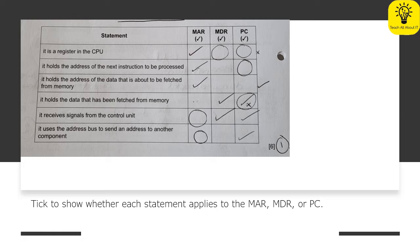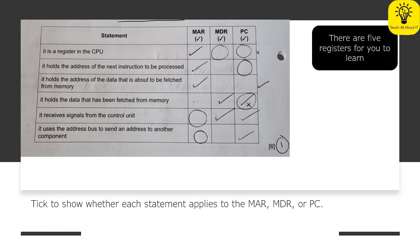So let's have a look and see what we would actually be looking for here. So you need to be aware that there are five registers for you to learn so we've got three of them here. We have the PC, the program counter, the MAR, the memory address register, the MDR, the memory data register, we then also have the CIR which is the current instruction register and also the accumulator. So in this case we're only looking at three of the five but you definitely want to have all five of them on your flashcards.